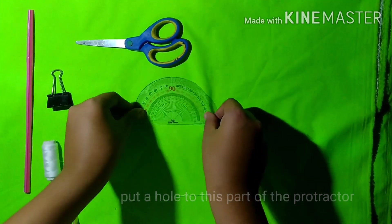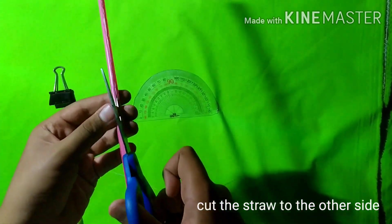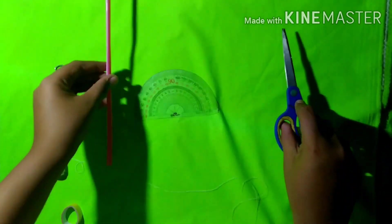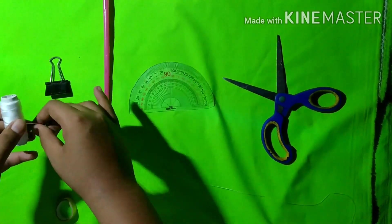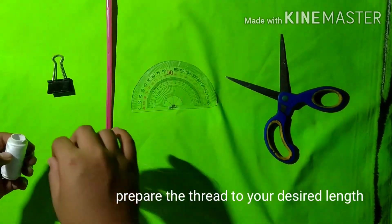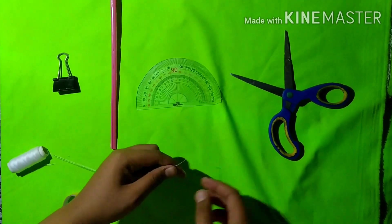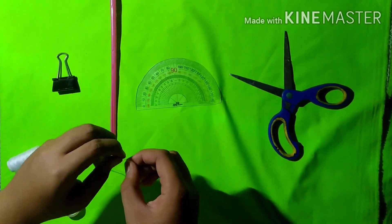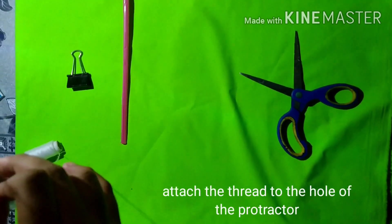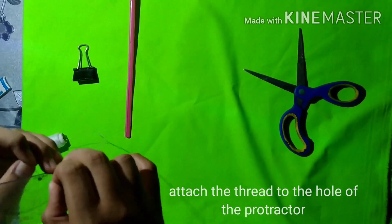Put a hole in this part of the protractor. Cut the straw to the other side. Prepare the thread to your desired length. Attach the thread to the hole of the protractor.